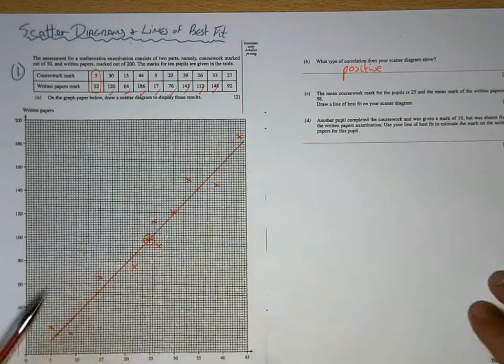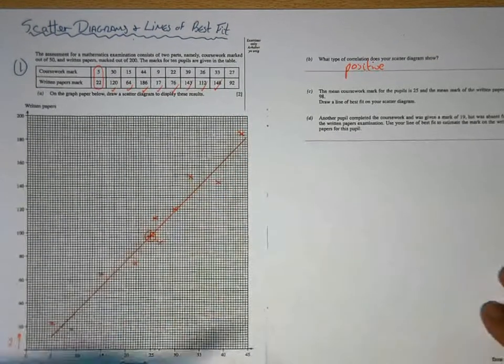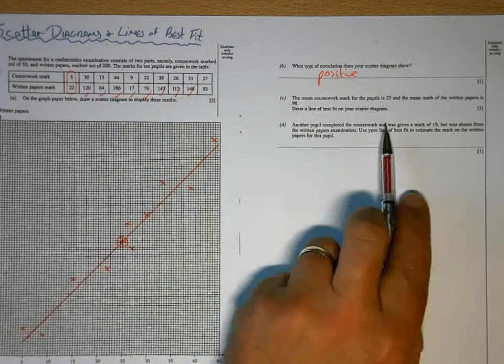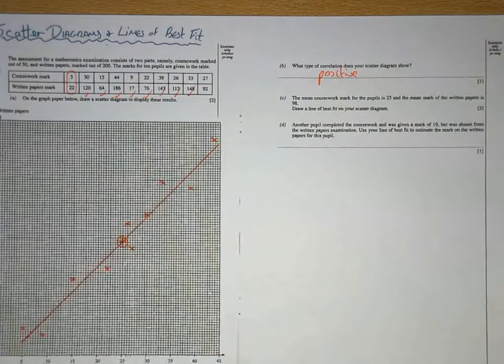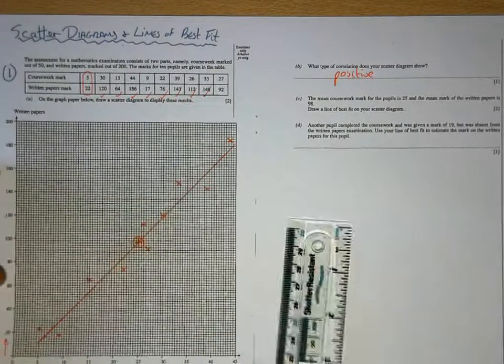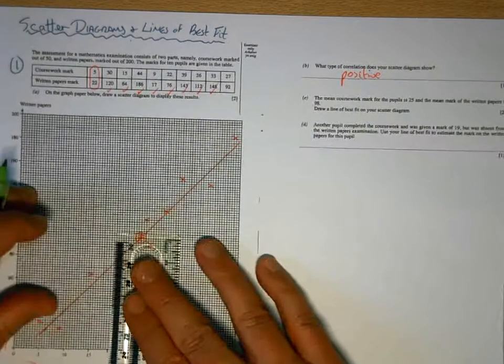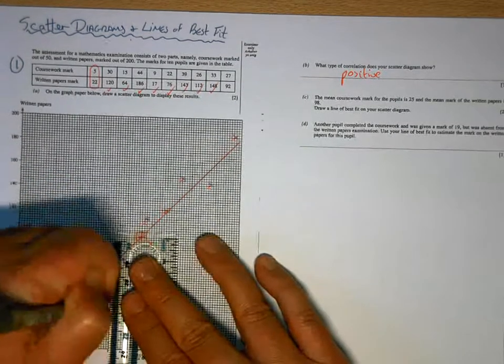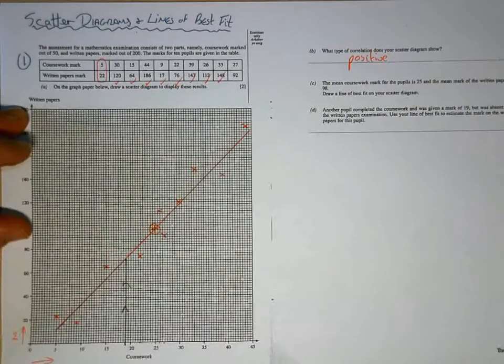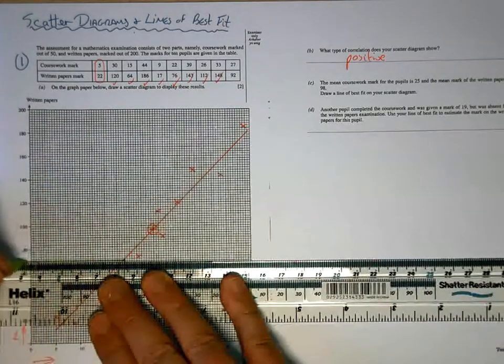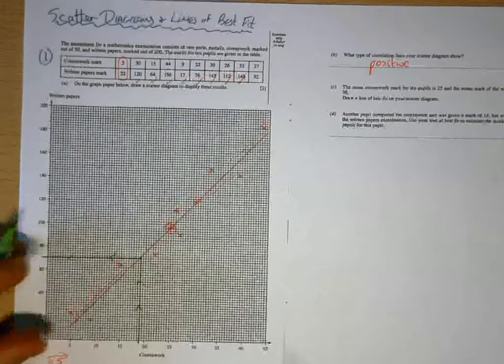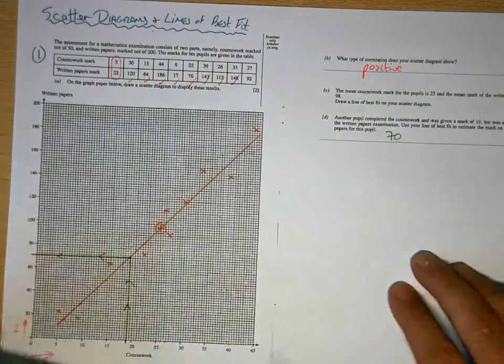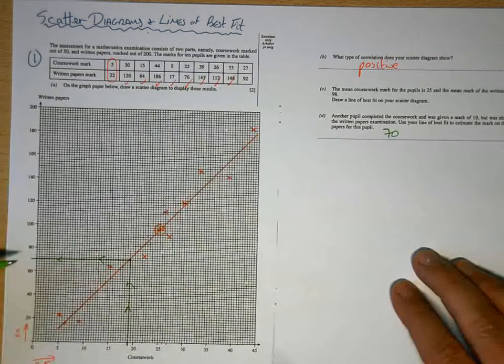And we don't tend to take the line of best fit beyond the furthest limits of our data because we don't know what happens beyond those points. Then the final part is usually using that. So another pupil completed the coursework and was given a mark of 19 but was absent from the written paper examination. Use your line of best fit to estimate the mark. So what we do is we use the line of best fit. We find 19 on the coursework which is there. And it's well worth in the exam you marking this onto your graph. So you're showing the examiner that you know what you're doing. So that's 19. So that would tell us that we're expecting a test mark of 62, 46, 8, 70. So you're using the line of best fit, going into the line with the mark you know and reading off the line to estimate the result.